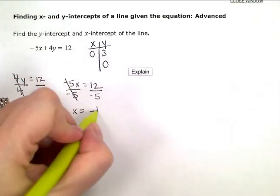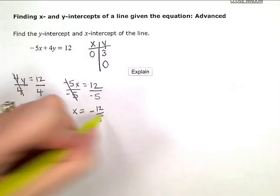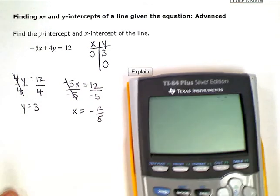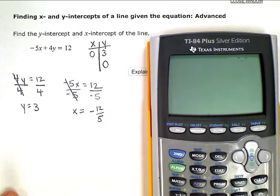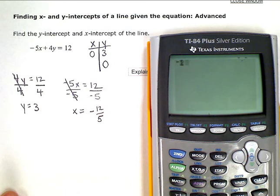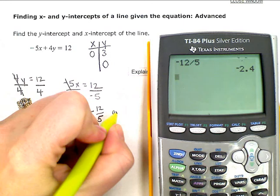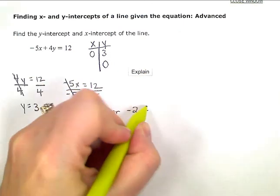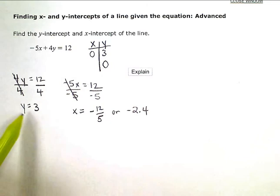Or, I could change it to its decimal equivalent. So, if I do 12, and I'll even put the negative 12, divide it by 5. The decimal equivalent is negative 2.4. Usually, when we're graphing, this is the easier one to visualize.